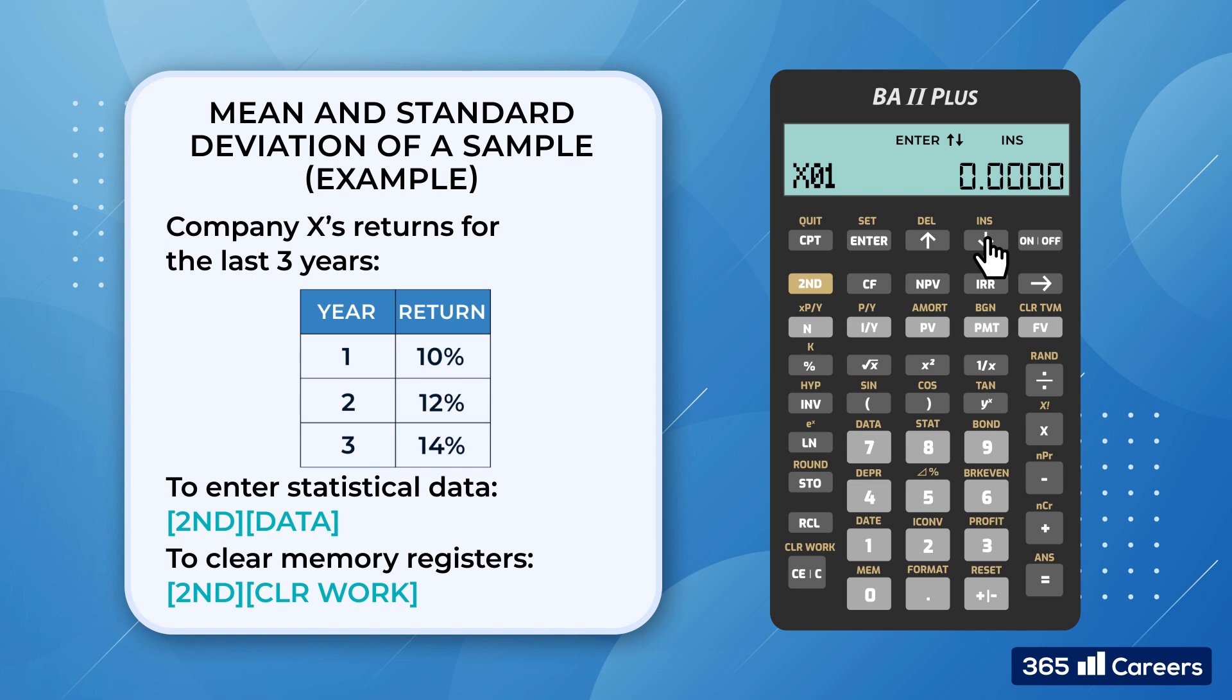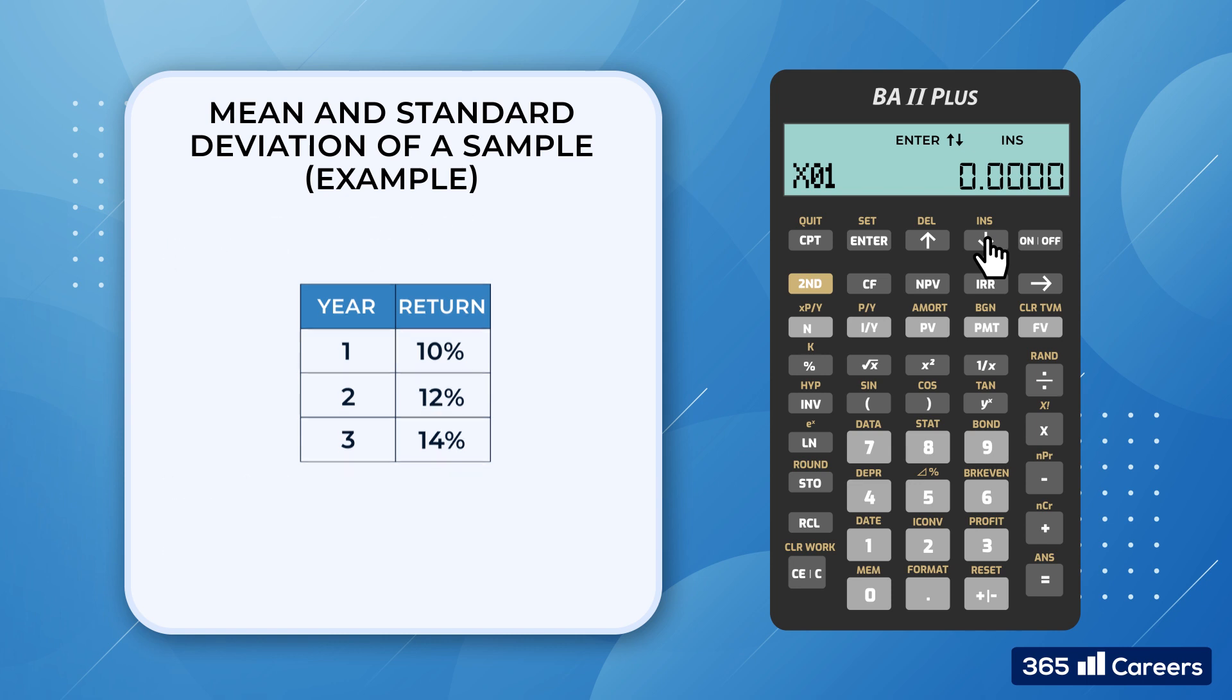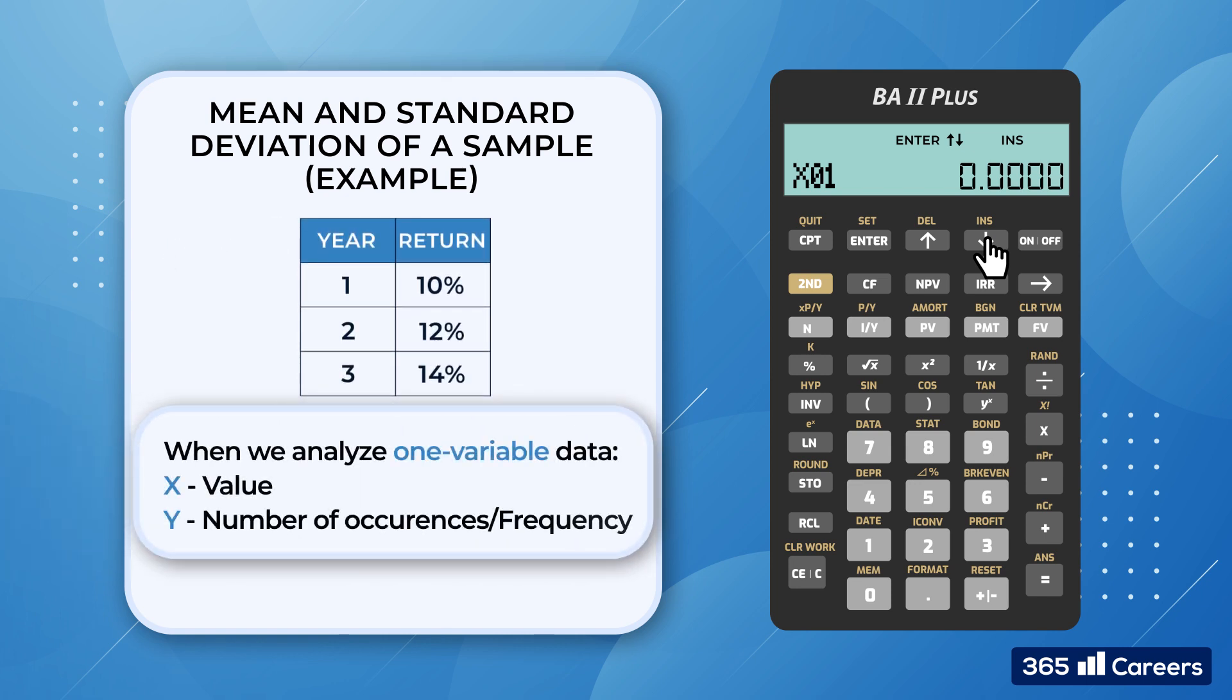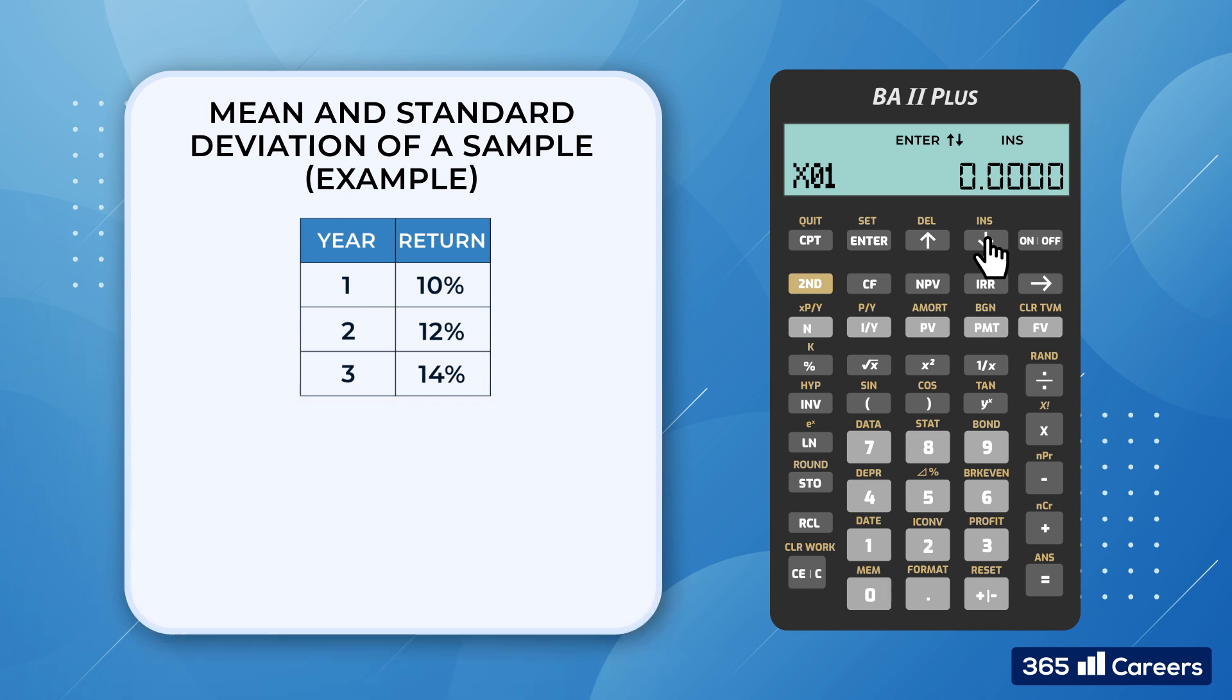In addition, we use historical data. Therefore, we don't need to enter anything for Y. When we perform analysis on 1 variable data, X represents the value and Y specifies the number of occurrences or frequency.